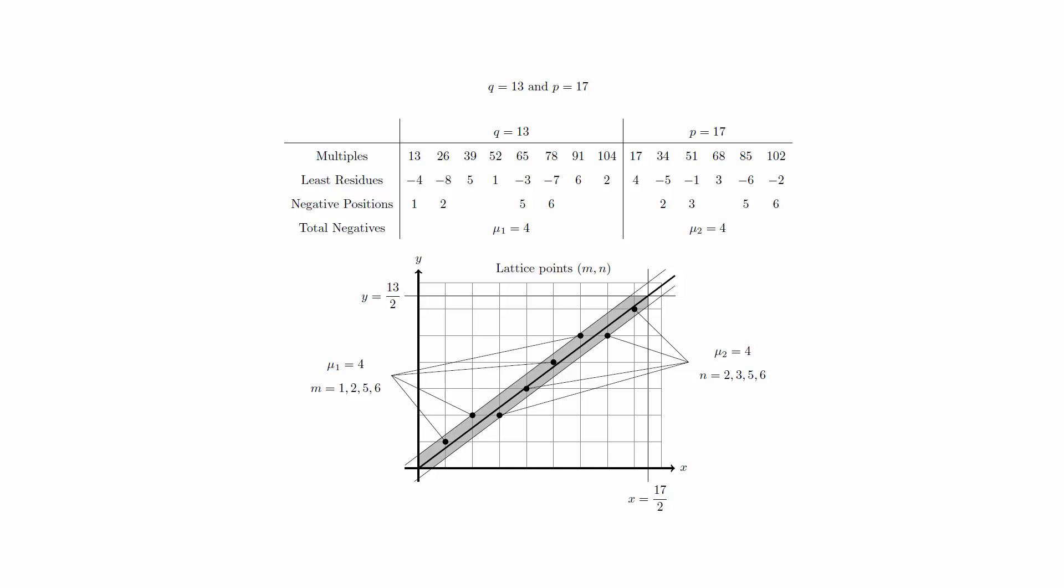Lattice points hold the answers to other number theoretic questions as well. Gauss's circle problem is an attempt to determine the average number of ways we can write the natural number n as the sum of two squares. In this case, we're looking at all integer solutions, not just natural number solutions.